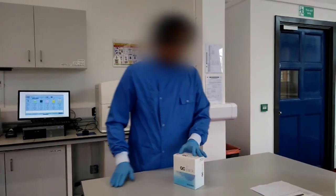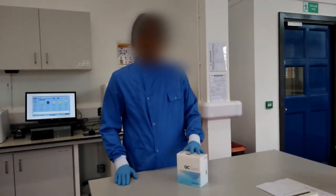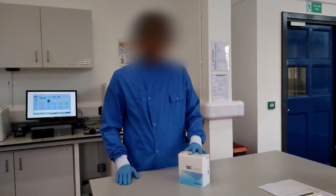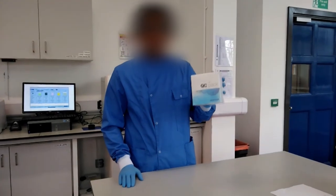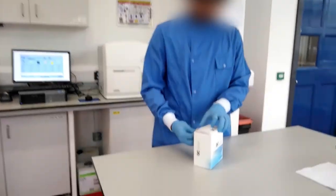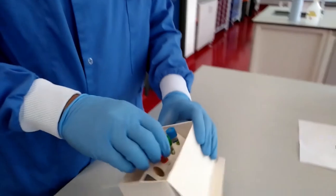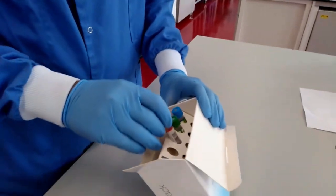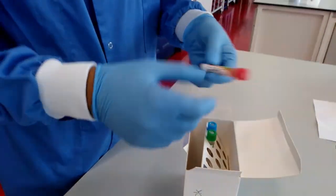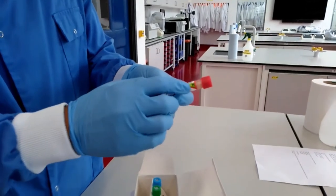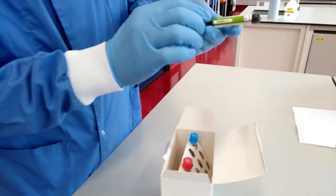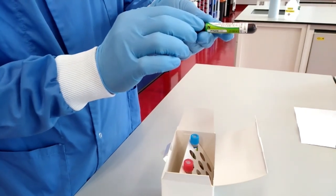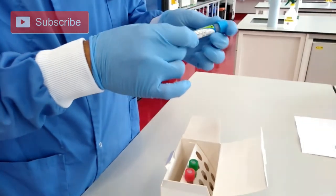Before we can run blood samples on the hematology analyzer PENTRA, it's important to run the controls. This is the controls pack. If you open it, you can see that there are three different controls: one called High or H, the second one called Normal or N, and the third one called Low or L.